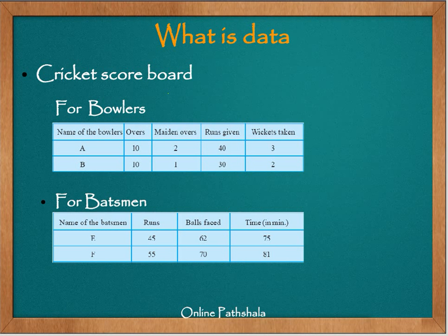So what is data? Let's look at the scoreboard here which we normally see on TV. Here you can see the scoreboard for bowlers, in which we have bowlers A and B. Bowler A has bowled 10 overs, in which 2 of them are his maiden overs. He has given 40 runs and has taken 3 wickets.